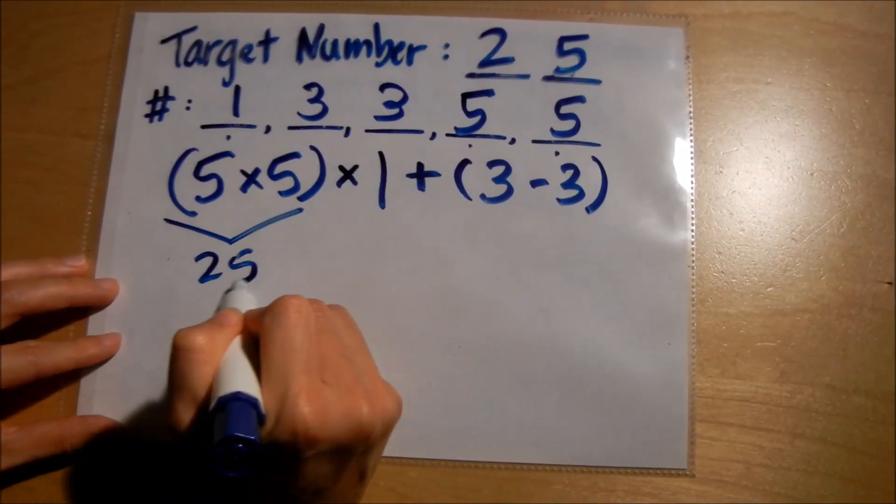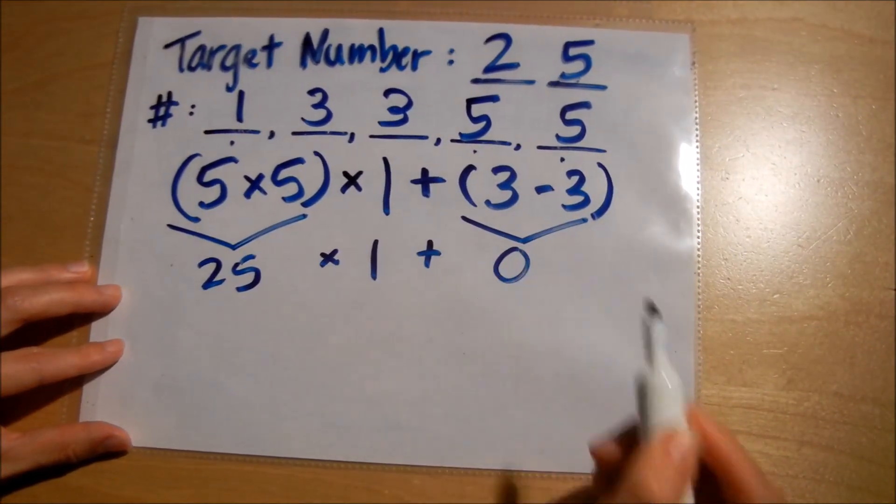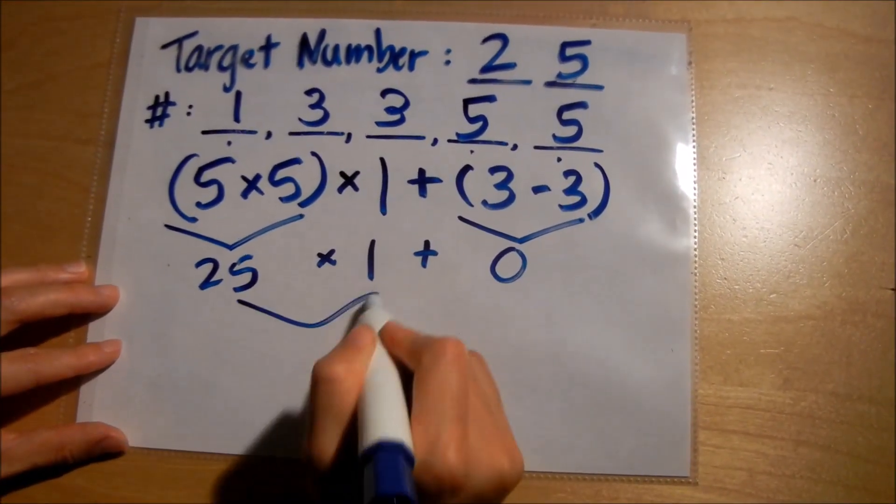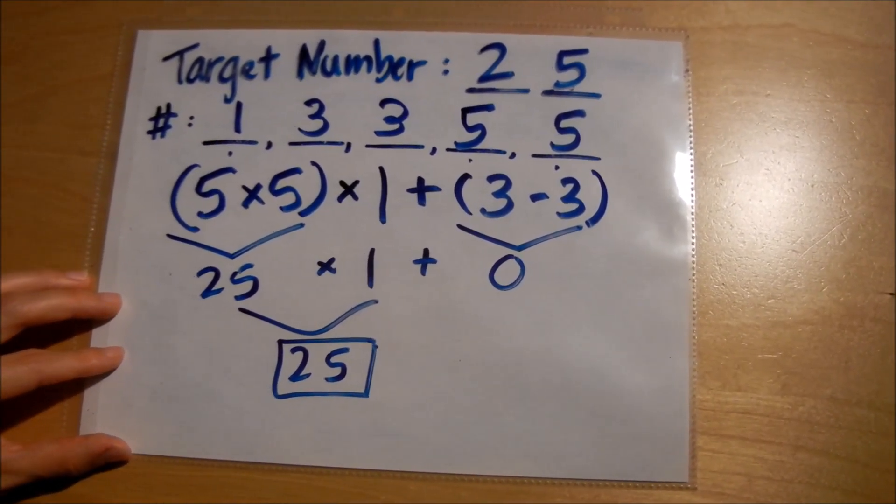Let's try out this problem. If I solve it out, this makes 25 times one plus, and this makes zero. Twenty-five times one is twenty-five plus zero is twenty-five. I got my target number, twenty-five.